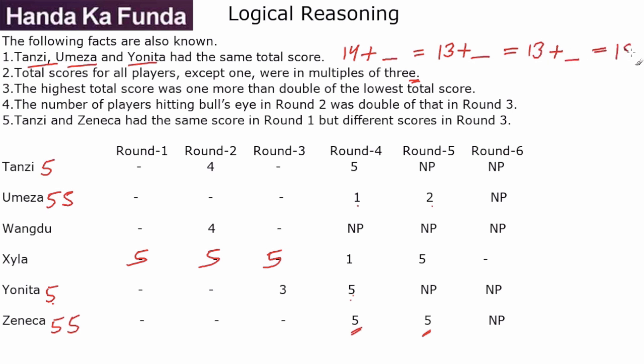But if I make this as 18, then this will be 4 which is okay, but this will be 5. And that would mean that Umeza has 5, 5, 5, 15, 1, and 2, and then has an NP. But if she hits three bull's eyes, she would have participated in round 6 also, which means my assumption that all three are 5 is wrong, which means my assumption that the last value for Umeza is 5 is incorrect. And that means a score of 18 is not possible, or the score should be 15.